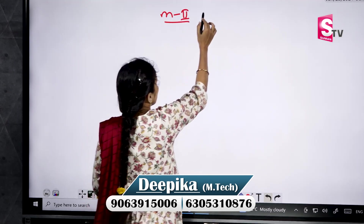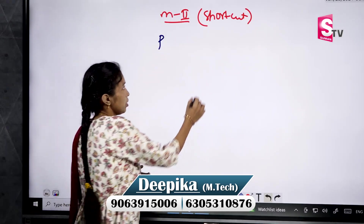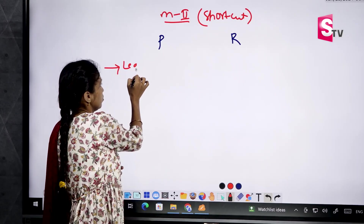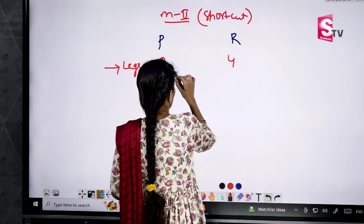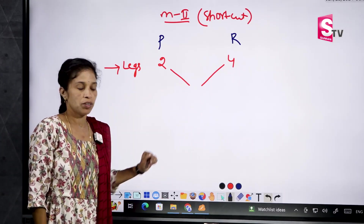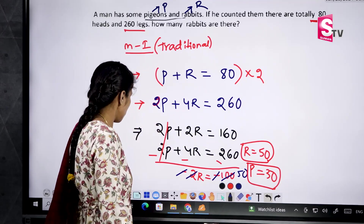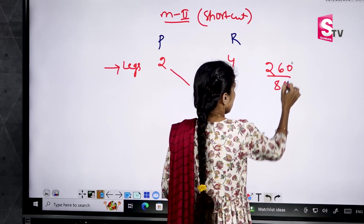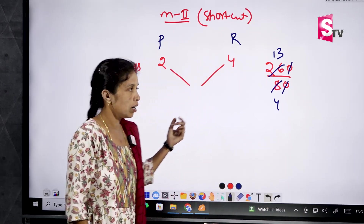This is the shortcut method. P is pigeons and R is rabbits. For pigeons, there are 2 legs; for rabbits, there are 4 legs. We solve this using the allegation and mixture method. The total we have is 26 legs. To find the average: 26 divided by 8 total heads gives 13 by 4.